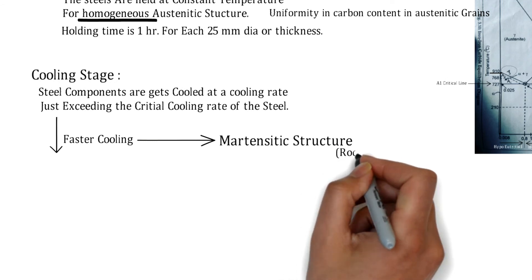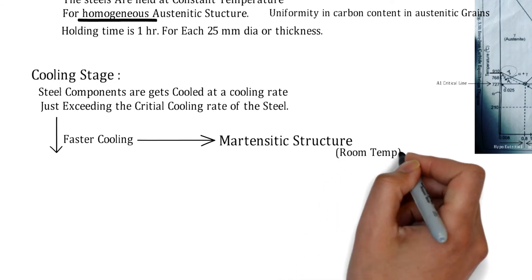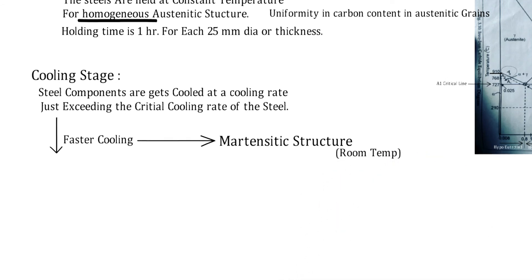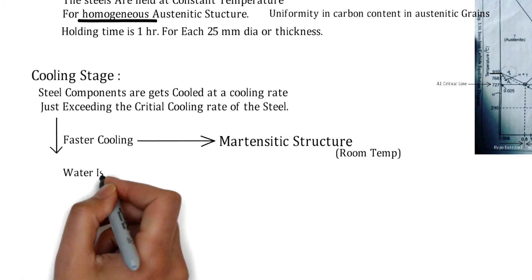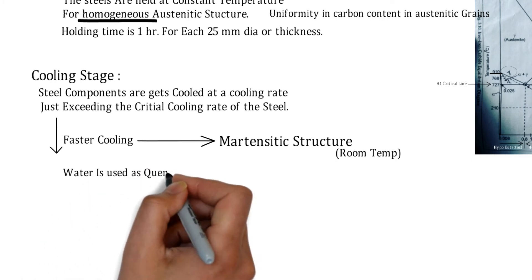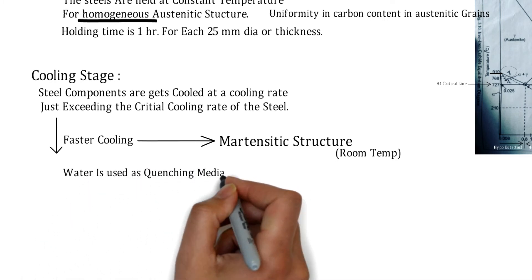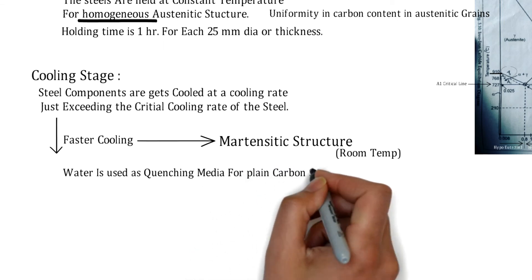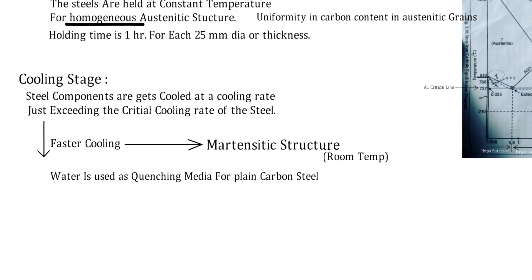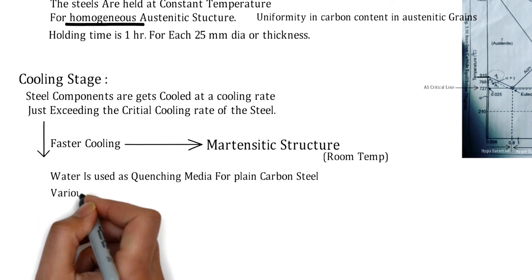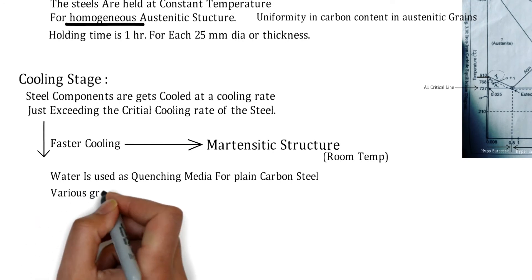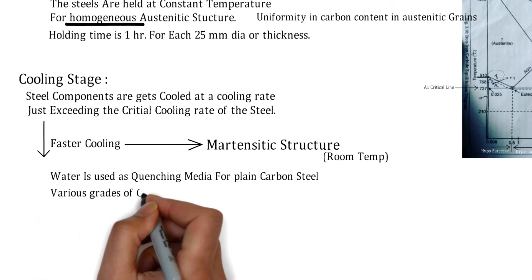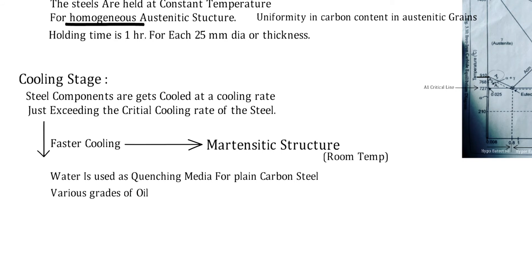The martensitic structure is formed at room temperature. Water is used as the quenching media for plain carbon steels, whereas various grades of oil are used as quenching media in the case of alloy steels.